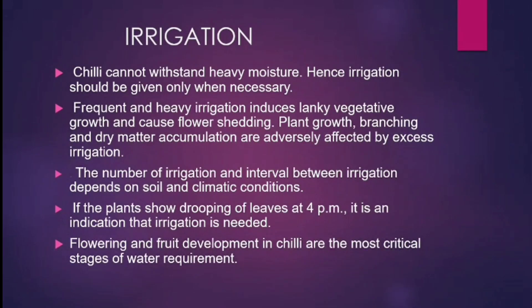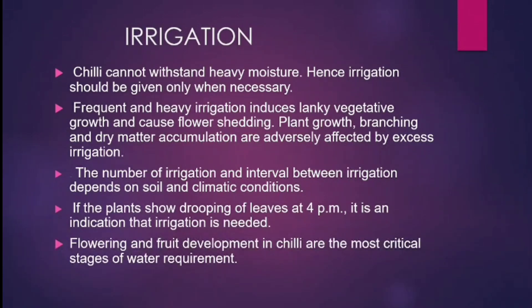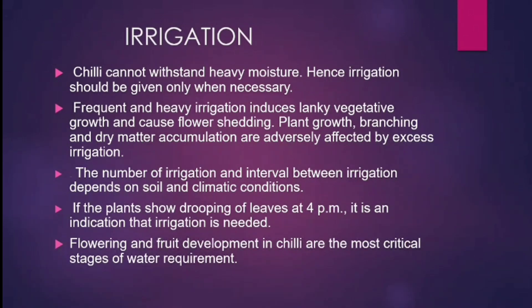Irrigation. Chilli cannot withstand heavy moisture, hence irrigation should be done only when necessary. Frequent and heavy irrigation induces lanky vegetative growth and causes flower shedding. Plant growth, branching and dry matter accumulation are adversely affected by excess irrigation. The number of irrigations and interval between them depends on soil and climatic conditions. If plants show drooping of leaves at 4 pm, it is an indication that irrigation is needed. Flowering and fruit development are the most critical stages of water requirement.